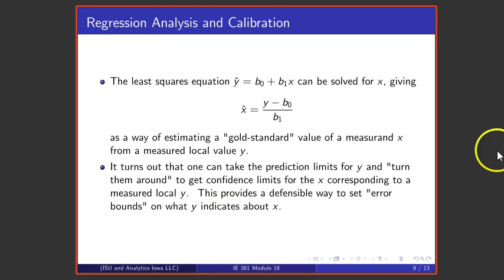You can take the least squares line that is of the form y hat is coefficient b0 plus coefficient b1x and solve for x. And that gives a way to take a y and convert it to an estimated or guessed at gold standard value, true value x. It also turns out to be the case that the prediction limits for y can be turned around to get confidence limits for the x corresponding to a measured value y. And that provides a good way to set error bounds on what a measurement y tells one about the measurand x.